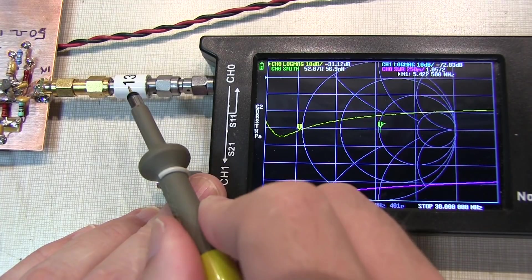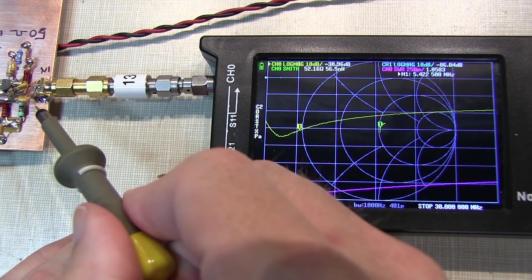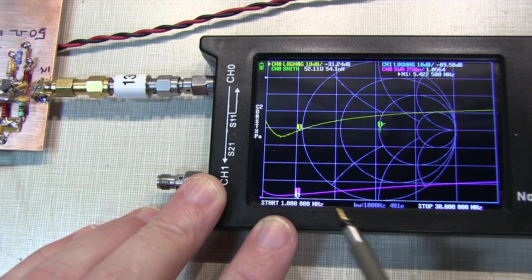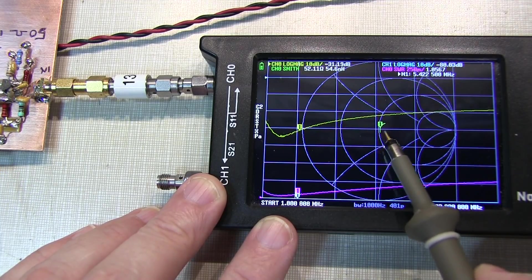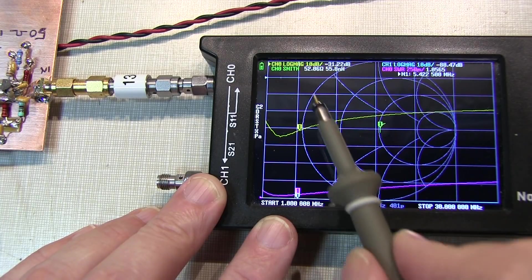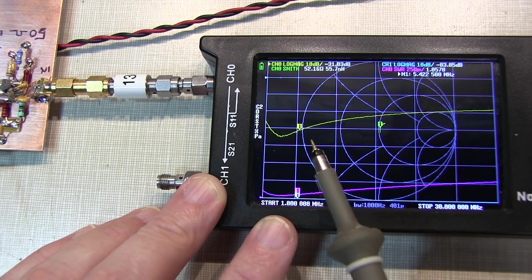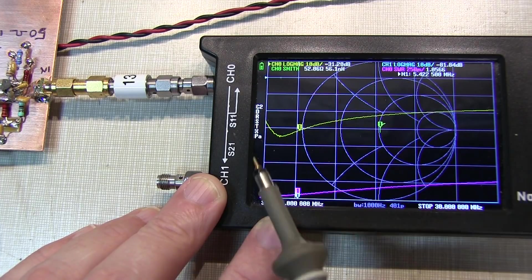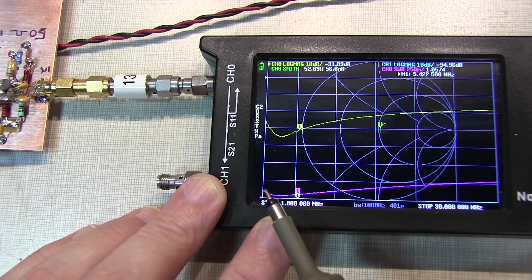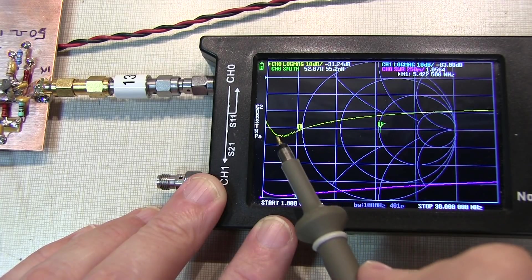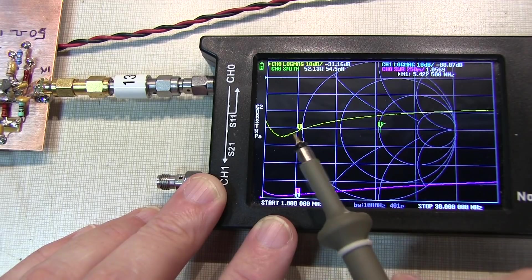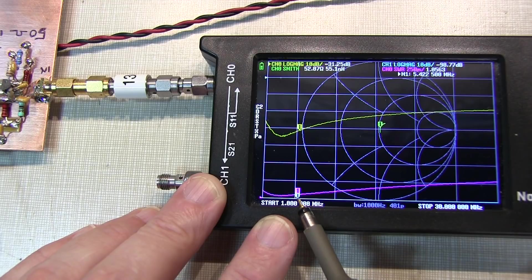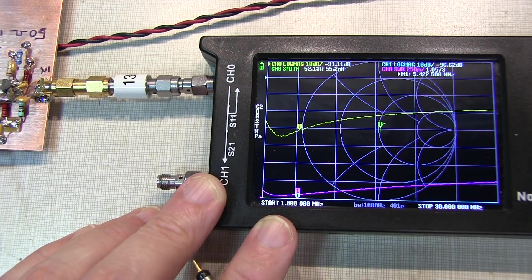With the proper calibration with the 13 dB attenuator going into our termination insensitive amplifier, measuring again from 1 to 30 megahertz, we can see that my input impedance is very close to 50 ohms. In fact, at the marker frequency, which is about 5.4 megahertz, we can see that we're sitting at about 52 ohms of impedance, and we can see that the S11 is 30 dB or 31 dB, so we've got 31 dB of return loss. That translates to an SWR of about 1.05, so that all looks pretty good.